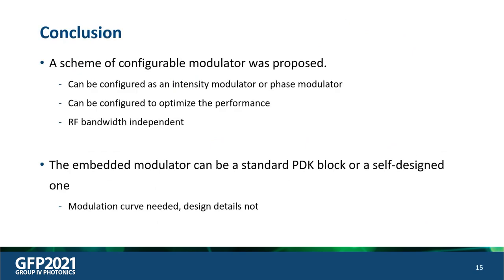In conclusion, we proposed a configurable modulator scheme that can be configured as an intensity modulator or a phase modulator, and can also be configured to optimize performance as a trade-off. The RF bandwidth is independent of the structure, so the RF performance is preserved. A key advantage is that this scheme is independent of the embedded modulator itself — the modulator can be a standard PDK block or a self-designed one. For optimization or changes, only the modulation curve is needed, not the design details, making it broadly applicable.